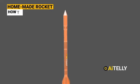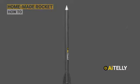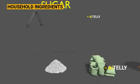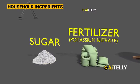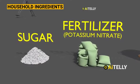How did they manage to create a rocket at home? First of all, they used some common household ingredients such as sugar and potassium nitrate, which can be easily obtained as a fertilizer.